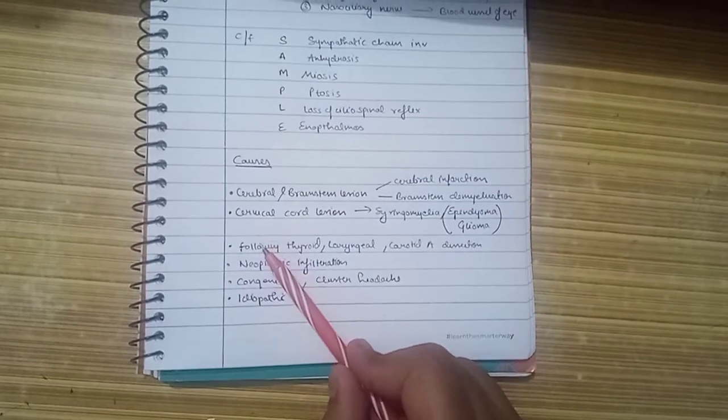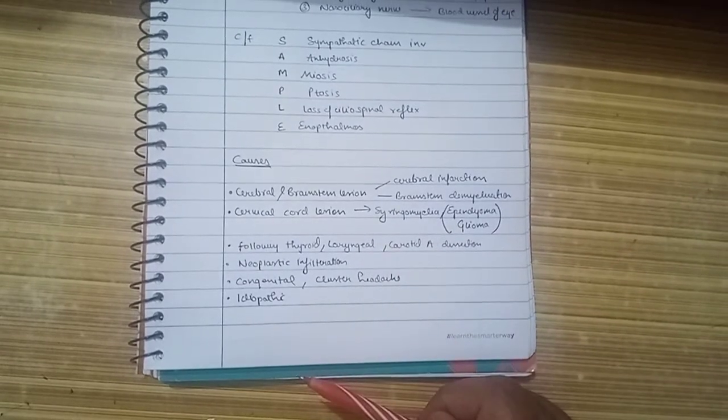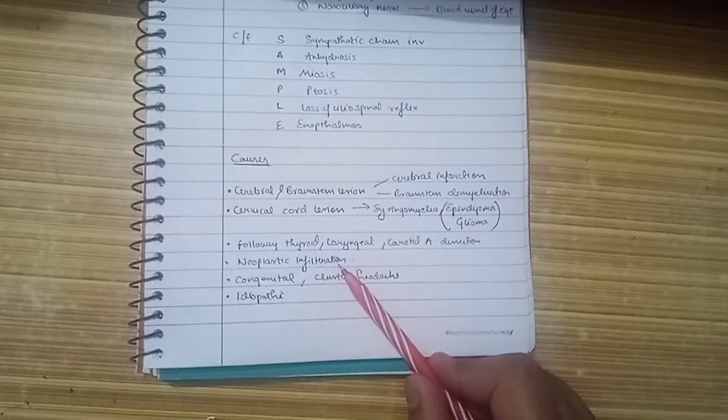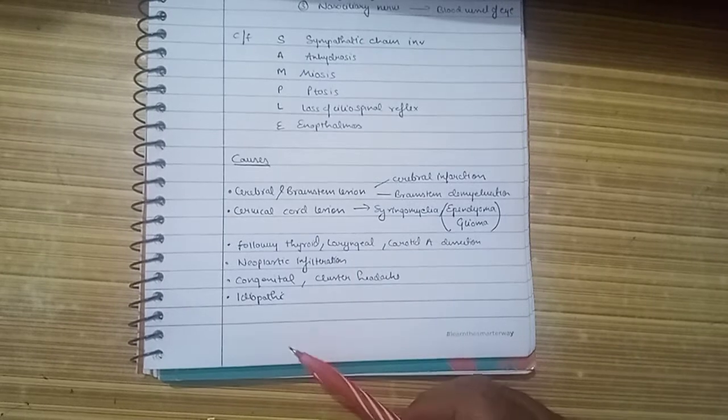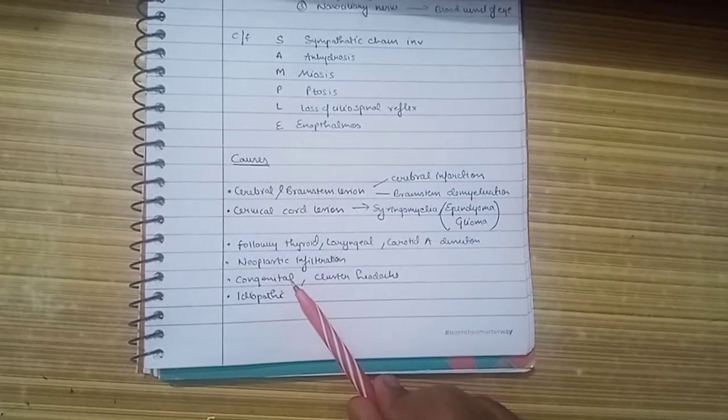Lymphoma is another cause. It can also occur following thyroid, laryngeal, or carotid surgery, and carotid artery dissection. Neoplastic infiltration in and around the oculosympathetic tract can also lead to it.